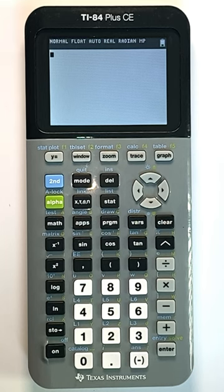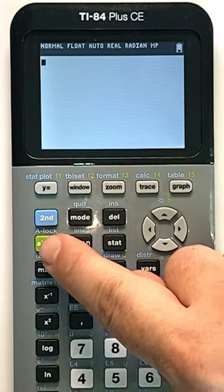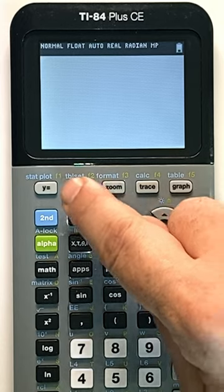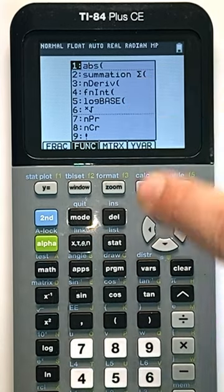Did you know that you could calculate the value of an integral? If you hit this alpha button and then the window, which is F2, you'll see the option that says function integrate number four.